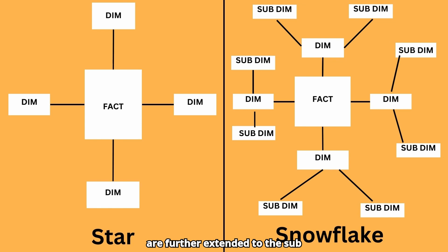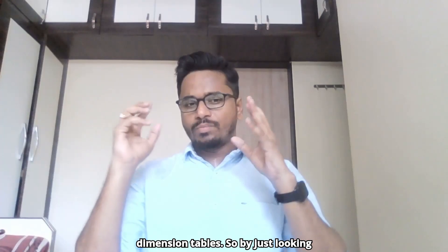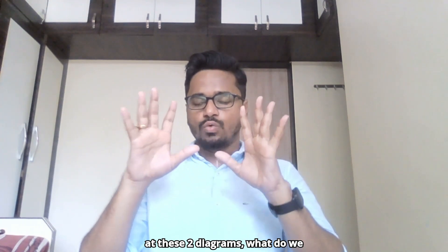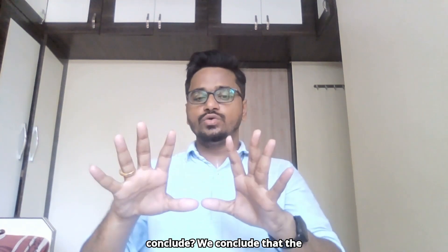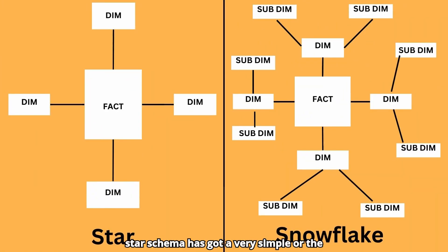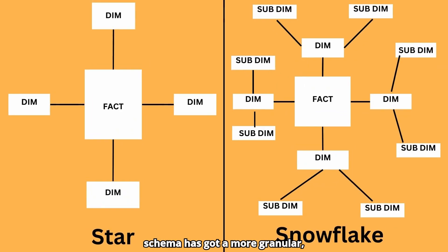In the case of the snowflake schema we can see the exact same structure, but additionally all the dimension tables are further extended to sub-dimension tables. So by just looking at these two diagrams, we conclude that the star schema has a very simple or basic structure, whereas the snowflake schema has a more granular, detailed, or hierarchical structure.